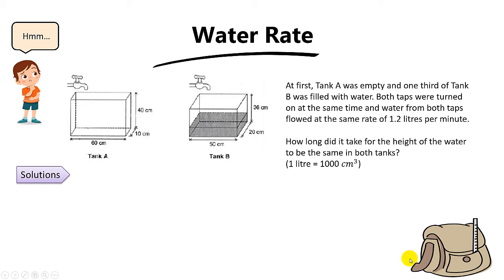Hi there, let's go through this question on water rate from a past PSRI paper. In this question, at first tank A was empty and one-third of tank B was filled with water. Tank A over here is empty, the dimensions are given here, while tank B at first is one-third filled with water. Then both taps were turned on at the same time and water from both taps flowed at the same rate of 1.2 liters per minute. The question asks how long did it take for the height of the water to be the same in both tanks?